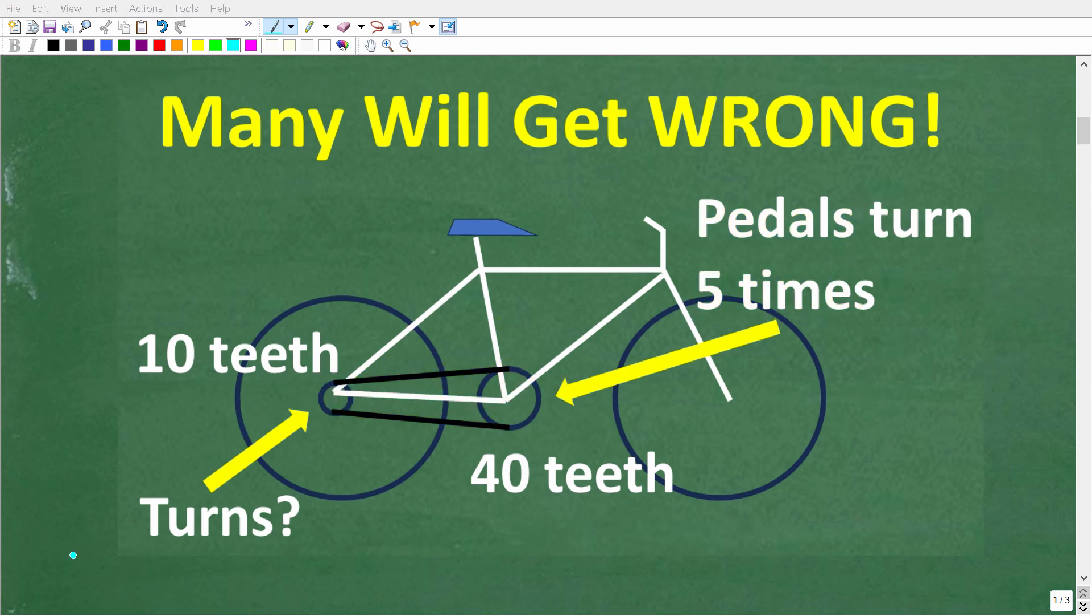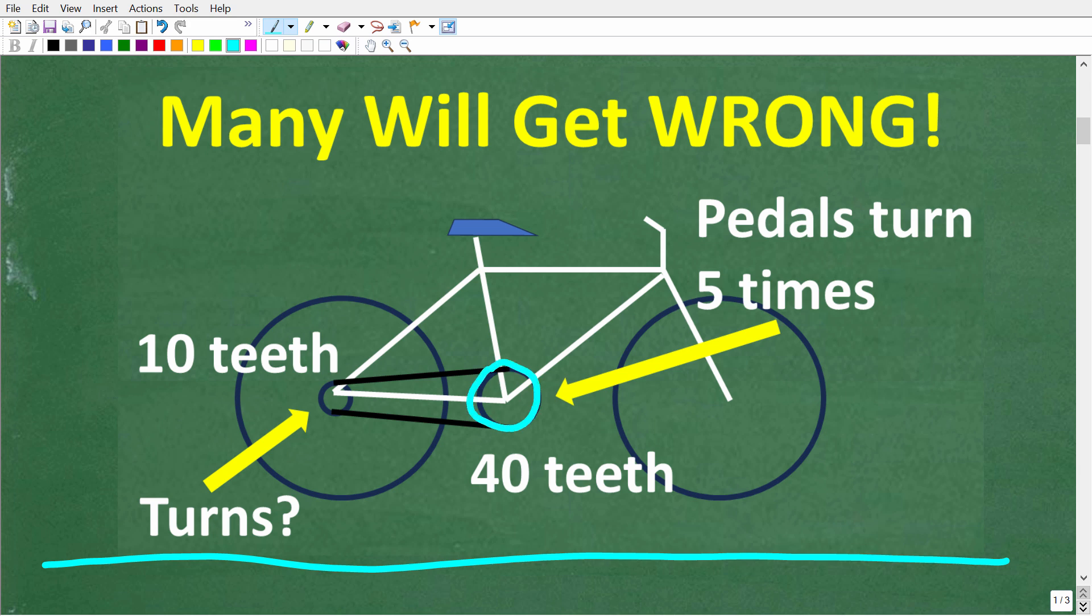So, the first thing that we want to do here is just use some common sense to make sure we understand which direction this problem is going. In other words, we have this big gear right here with 40 teeth and this small gear right here with 10 teeth. So, if we rotate this big gear one full time, is it going to make this small gear turn one time as well? Or is this small gear going to turn more than one time?